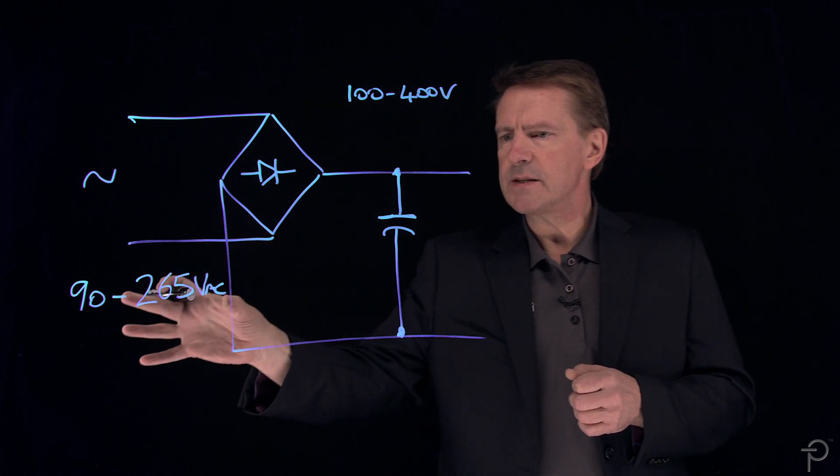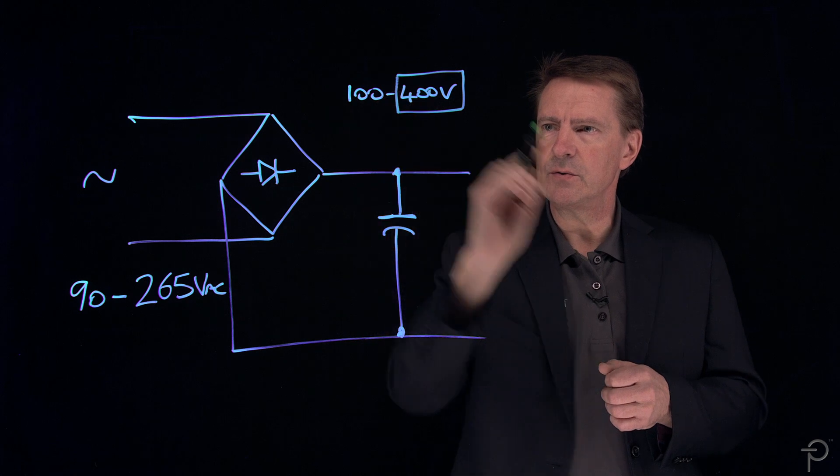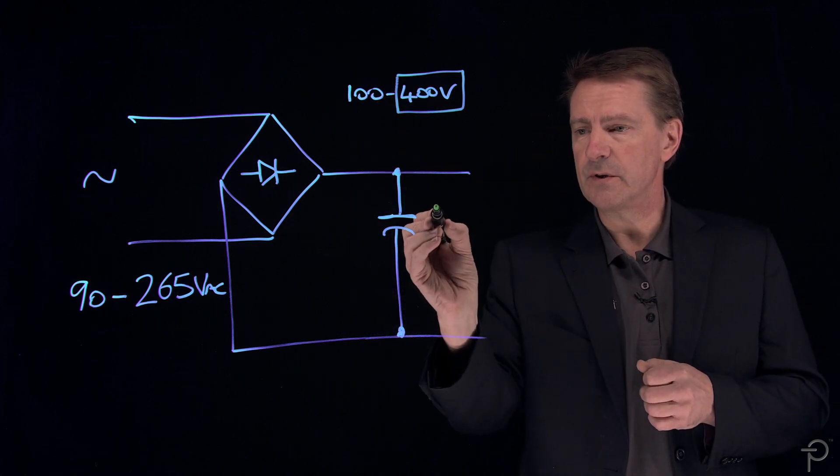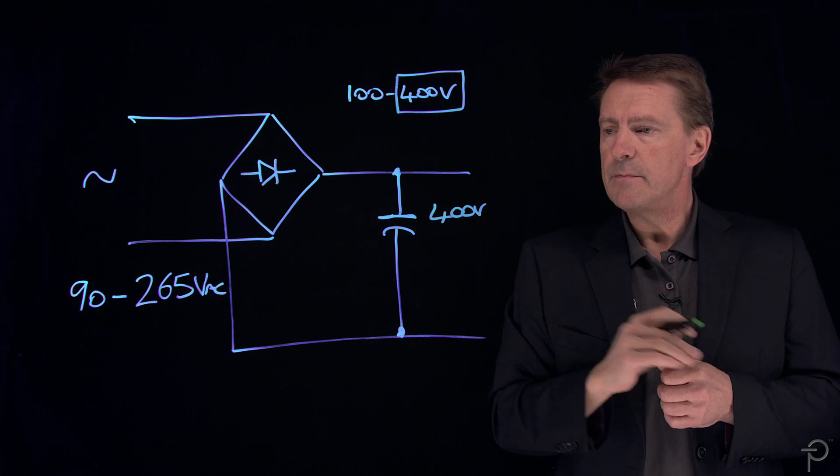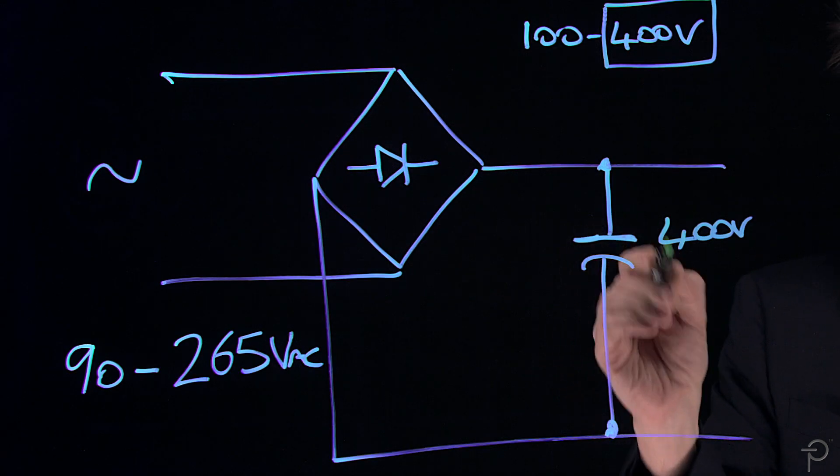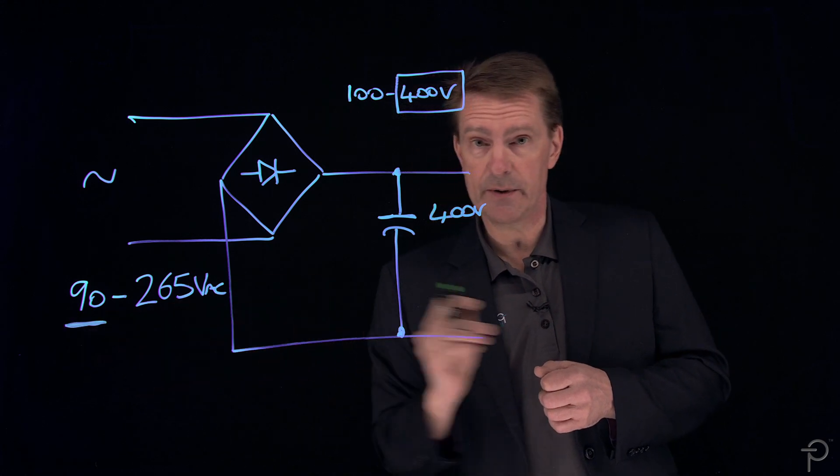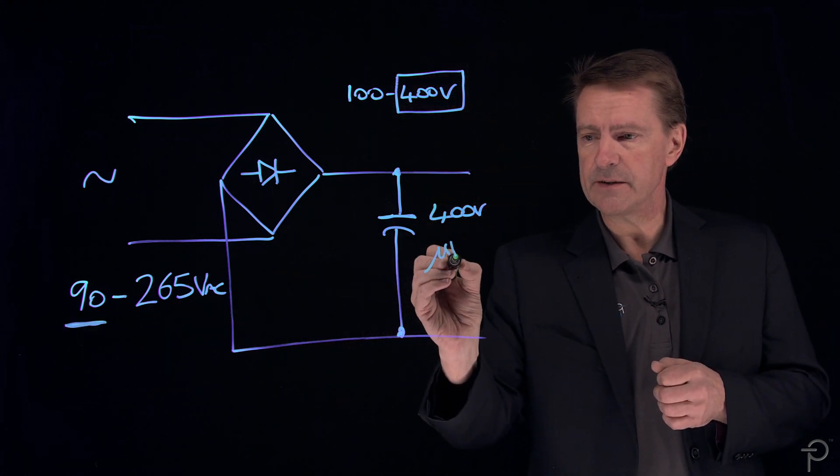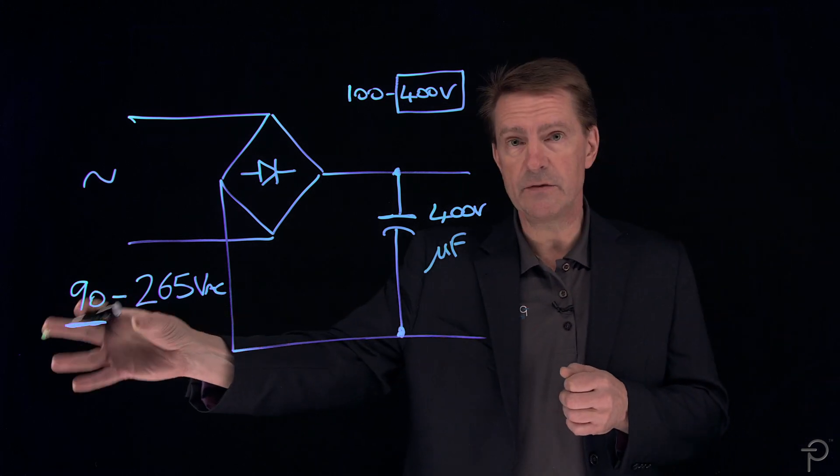So what that means is that this capacitor has to be chosen to accommodate or work reliably from 400 volts. So it has to be at least 400 volts in rating. But the storage capacitance that's needed is the highest when the input voltage is low. And therefore, the number of microfarads of capacitance is governed by the low voltage.